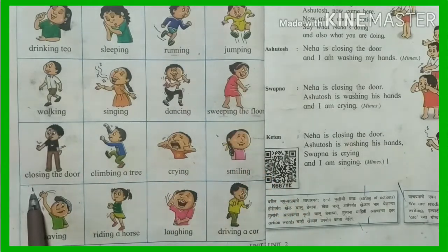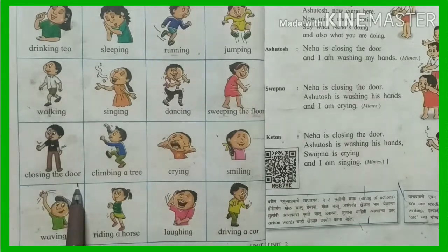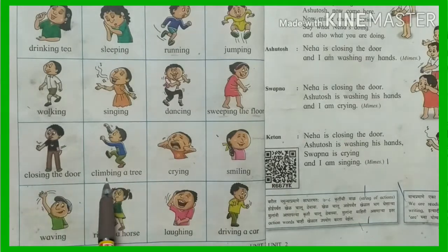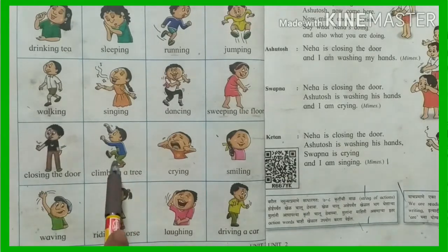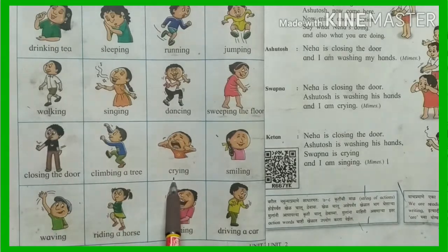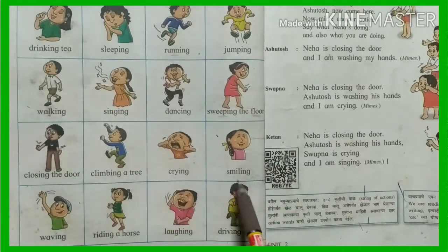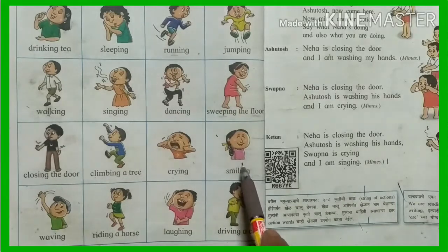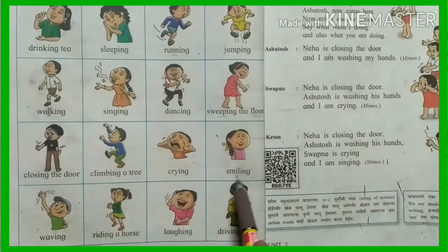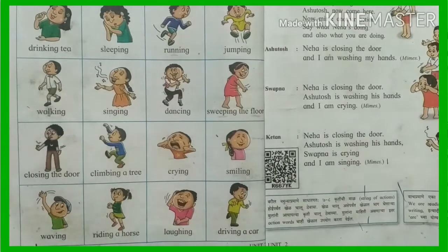Next picture: Closing the door. Closing the door means Darwaza jhakne. Next: Climbing a tree means Zaadavarti chadne. Next picture: Crying. Crying means Radne. Next picture: Smiling. S-M-I-L-I-N-G. Smiling means gently hasne — not laughing. Laughing means Mothya ne hasne, while Smiling means quietly or gently hasne.